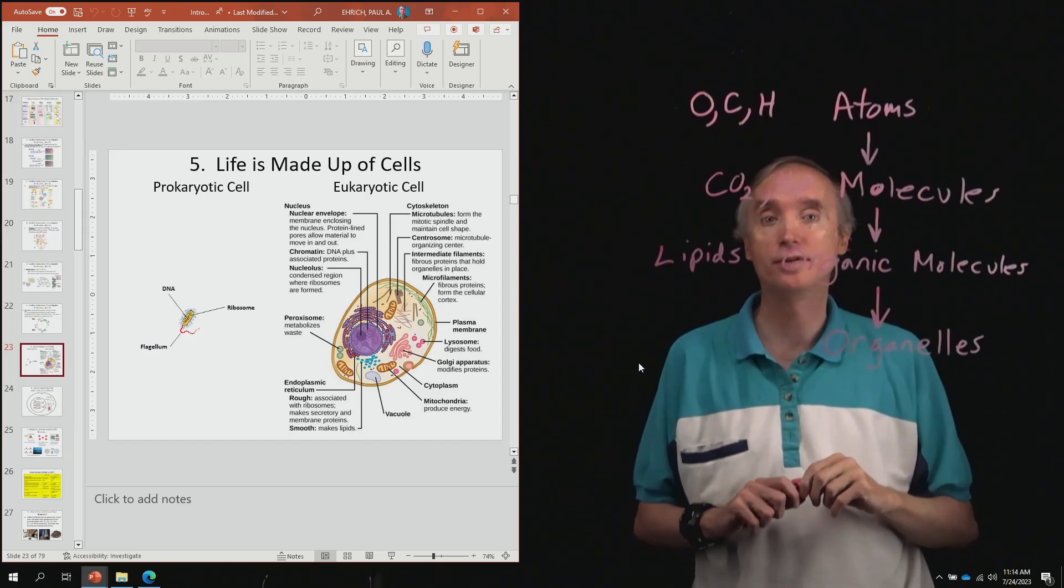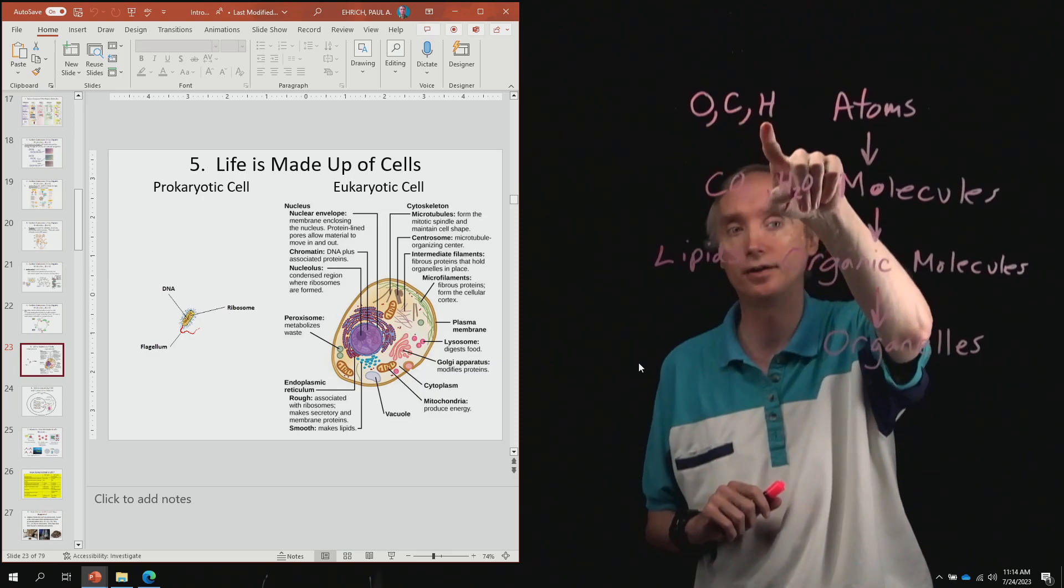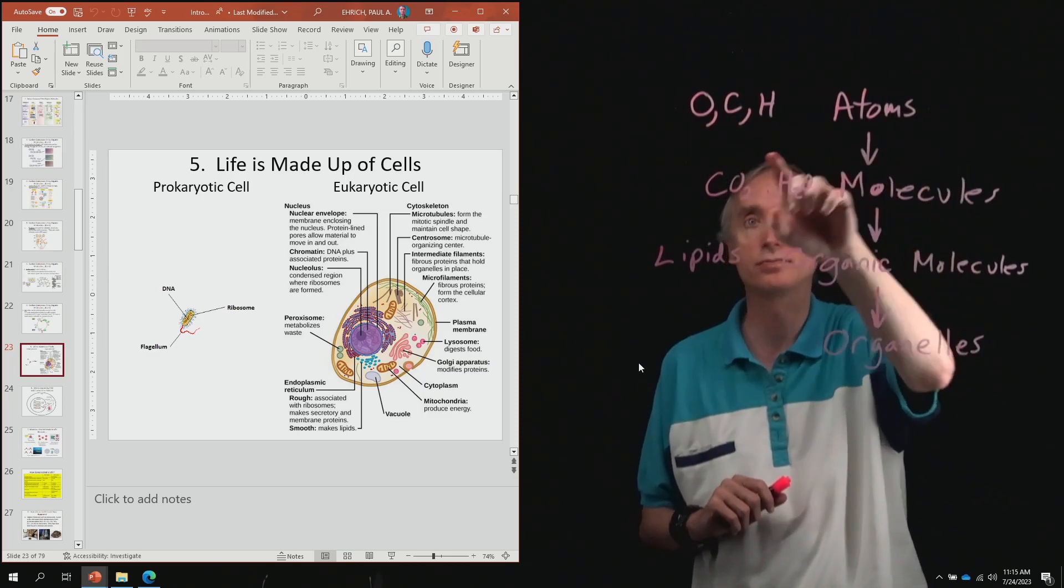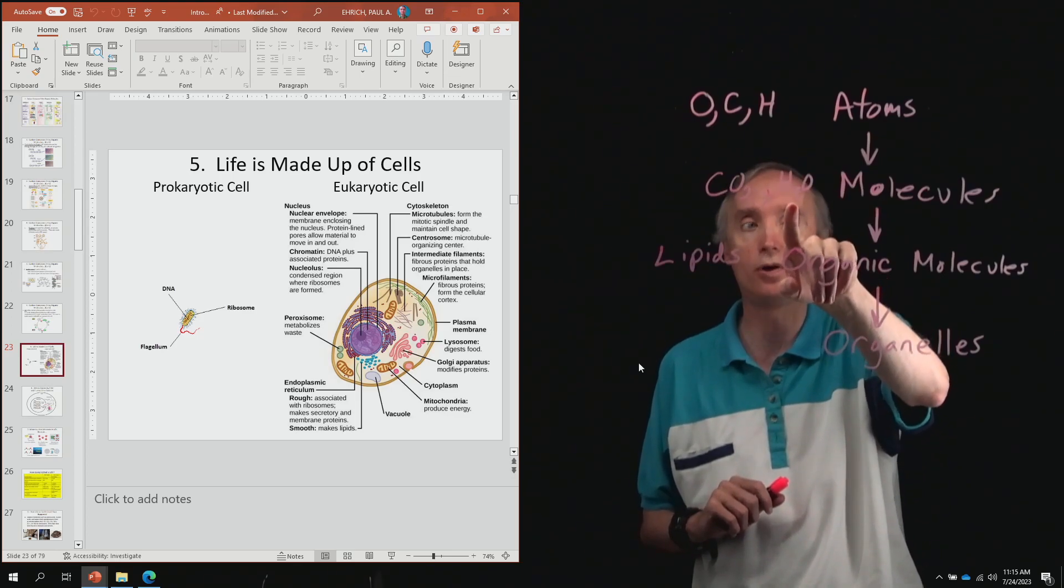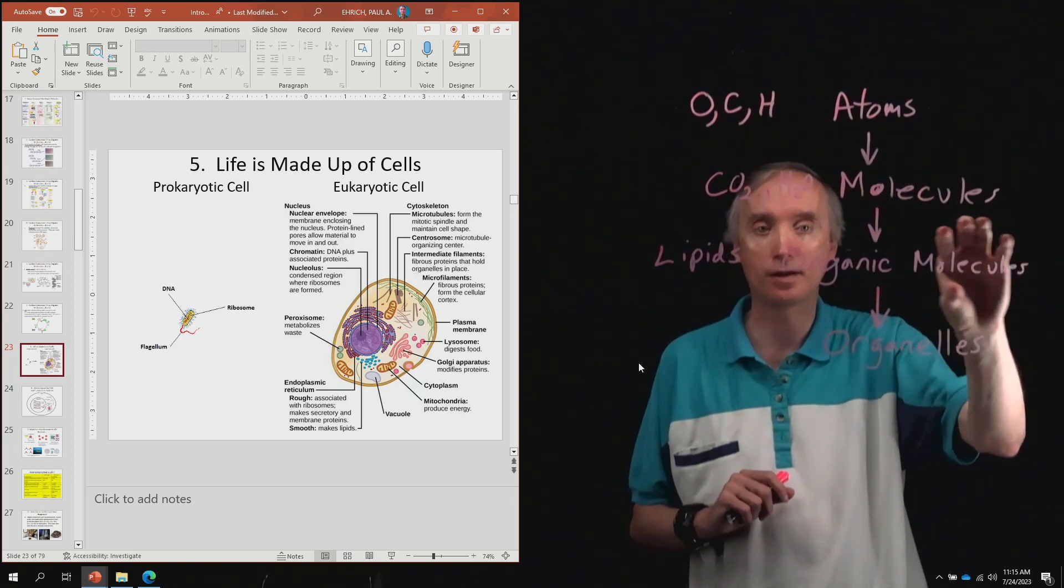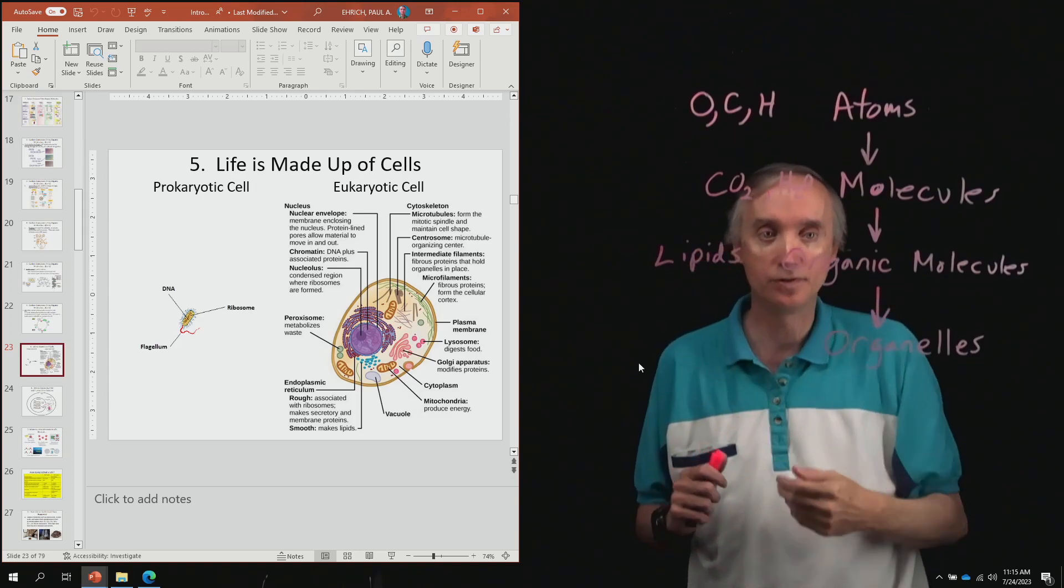Okay, we've said that life is composed of atoms such as oxygen, carbon, and hydrogen. Atoms are inside of inorganic molecules, such as carbon dioxide and water, and then those molecules in turn make up organic molecules, such as carbohydrates and lipids and proteins.